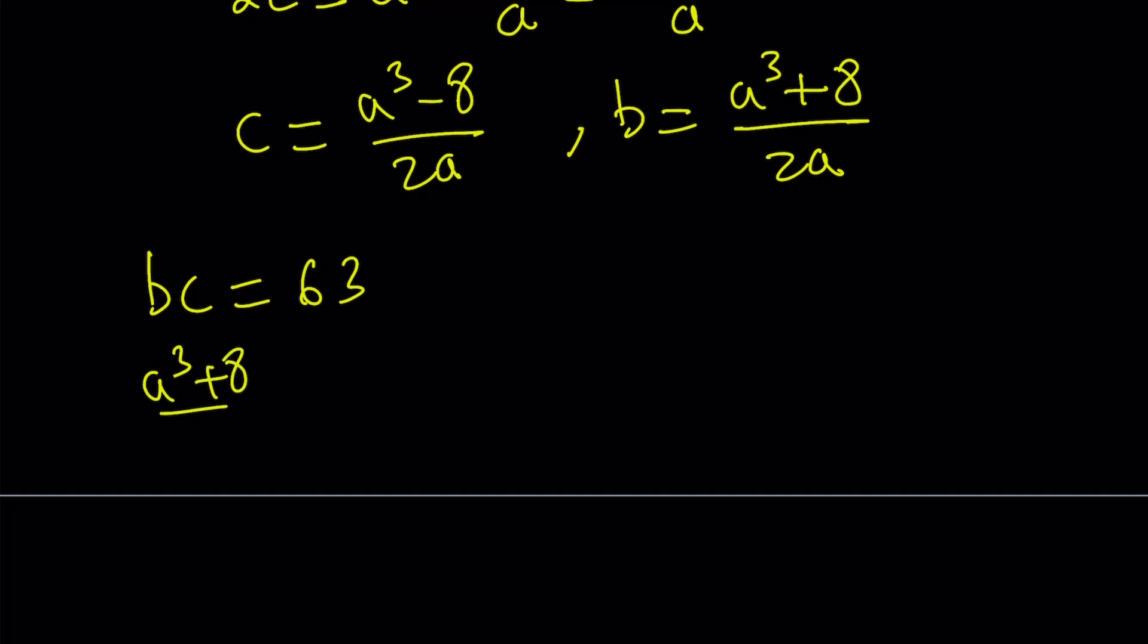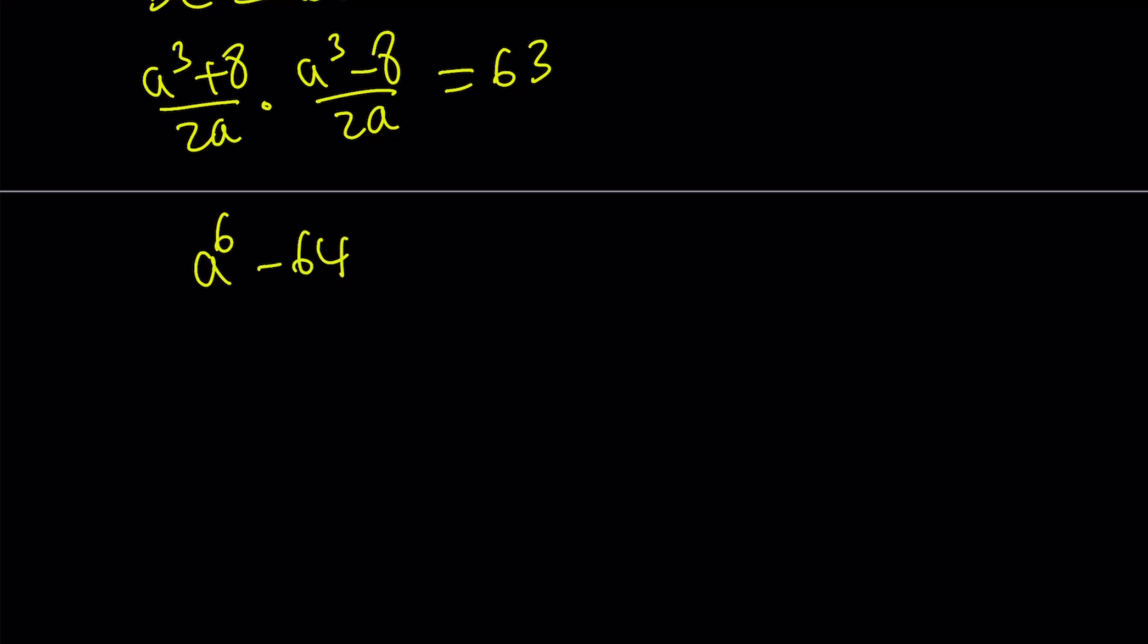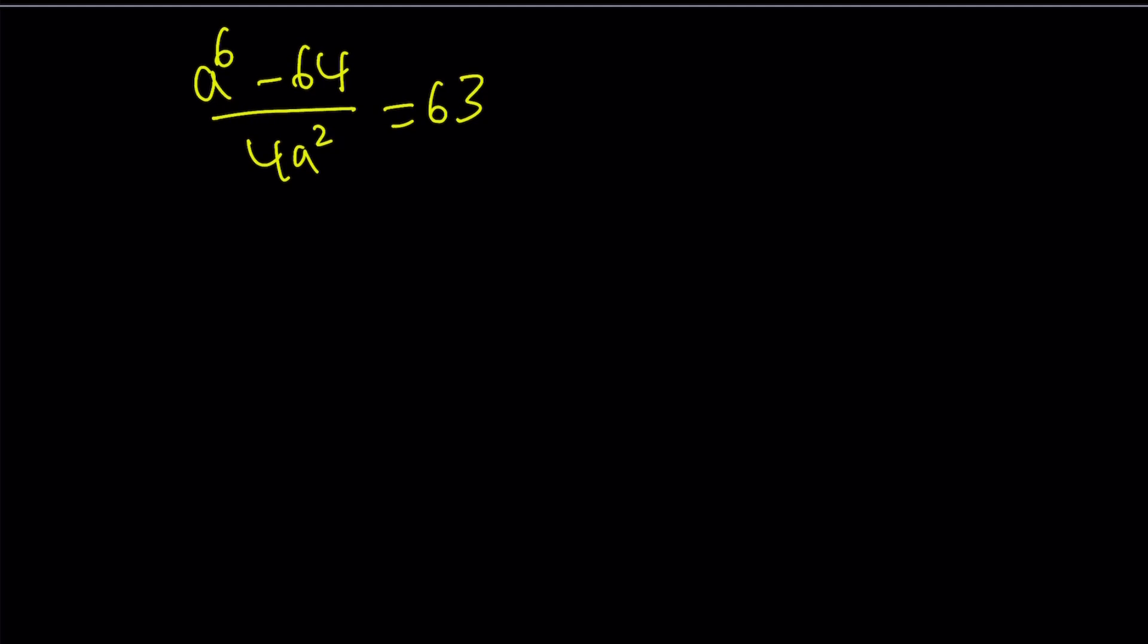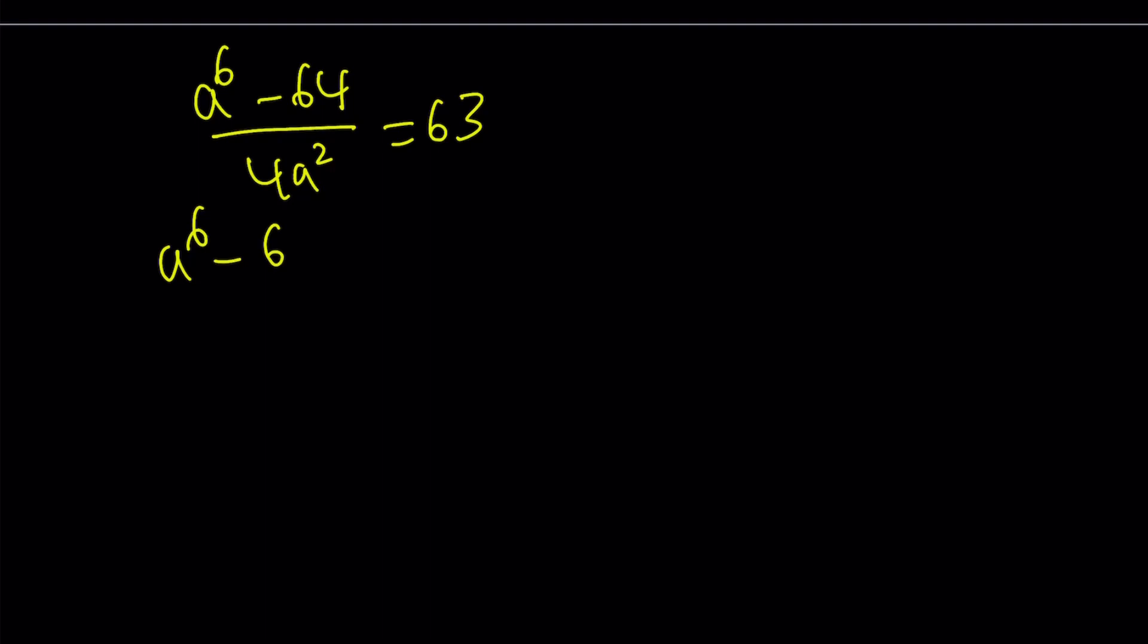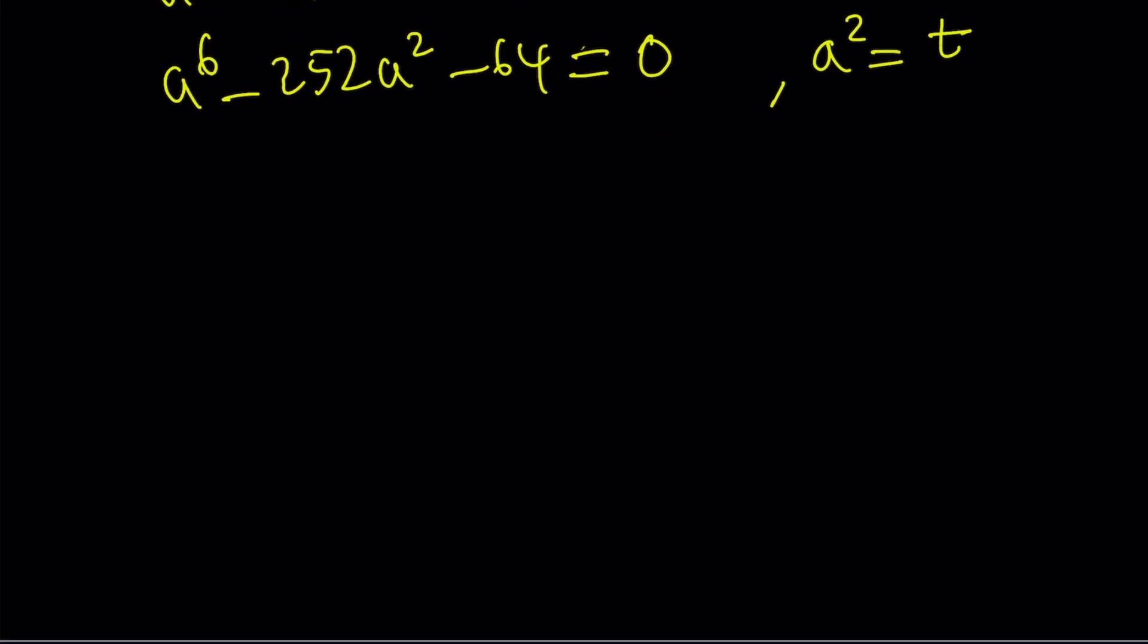And now it's time to use the third one, which is bc equals 63. Since I have b and c in terms of a, bc equals 63 is going to help out a lot. Now, b is a cubed plus 8 over 2a, and c is a cubed minus 8 over 2a. This equals 63. Notice that a cubed plus 8 and a cubed minus 8 are conjugates. Therefore, the product is going to be a difference of two squares, which is a to the 6th power minus 64, and the bottom is going to be 4a squared, and the whole thing equals 63. Now, from here, we're going to get a hexic equation, but we're going to turn it into a cubic. So let's go ahead and distribute. a to the 6th minus 64 is equal to 252a squared, which is 63 times 4. And we can put everything on the same side. a to the 6th minus 252a squared minus 64 is equal to 0. And now I can go ahead and call a squared, let's set it equal to t.